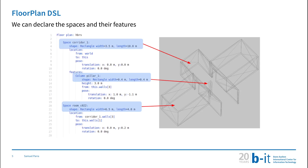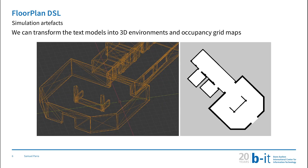Taking a closer look at the Floor Plan DSL — it is a textual model which we can use to declare the spaces, their features, and their locations in the world. We can then take these textual descriptions and transform them into 3D environments and occupancy grid maps through model-to-model transformations.